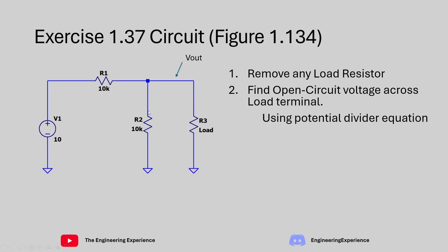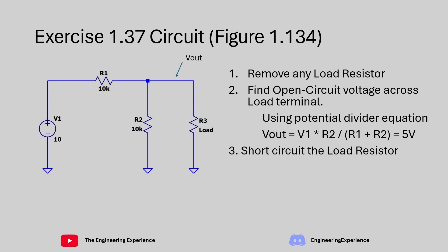So 10 volts divided by 2 is equal to 5 volts, as we have equal value resistors. We can also use the generic equation: Vout equals V1 times R2 divided by (R1 plus R2), where R2 is the bottom resistor and R1+R2 is the total resistance in the potential divider. This gives us an open circuit voltage of 5 volts. Next, we need to short the load resistor — connecting this point to ground — to find the short circuit current. We have a 10 volt power supply with a series 10kΩ resistor connected to ground, so 10 divided by 10,000 gives us a short circuit current of 1 milliamp.